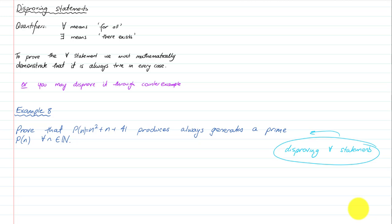Reminder: the upside-down capital A means 'for all', and the backwards capital E means 'there exists'. To prove a 'for all' statement, we have to mathematically demonstrate that it's true in every case. Or, we might disprove it through counterexample.